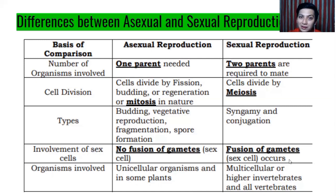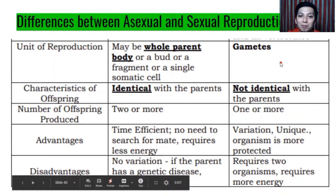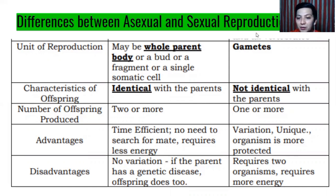Invertebrates are organisms without a spinal column; vertebrates are those with backbones. Unit of reproduction: in asexual, it may be the whole parent body, a bud, a fragment, or a single somatic cell — a body cell. In sexual, it is the sex cells or gametes. Characteristics of offspring: in asexual, offspring are identical to the parent; in sexual, offspring are not identical due to variation. Number of offspring: asexual produces two or more; sexual produces one or more.